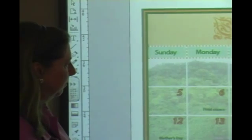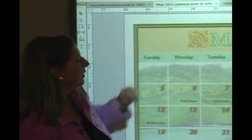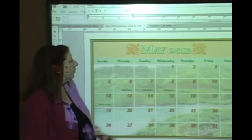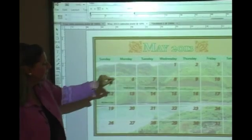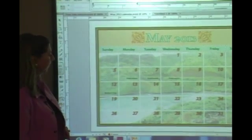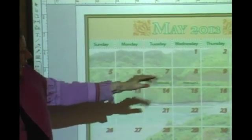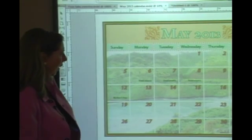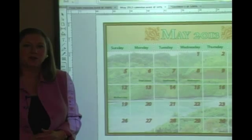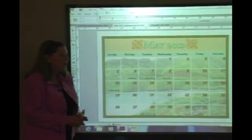Anytime a cell border touches something it shouldn't, you'll need to go in and tell InDesign not to apply the stroke on that side. The day-of-week labels are glyphs in a color, and the date numbers use old-style numerals. Down at the bottom you have text for the final examination period and graduation — which falls on Mother's Day weekend this year.